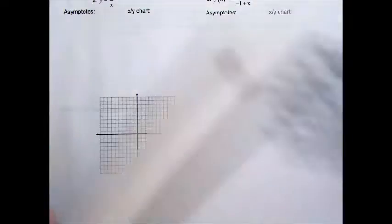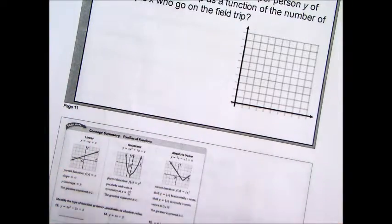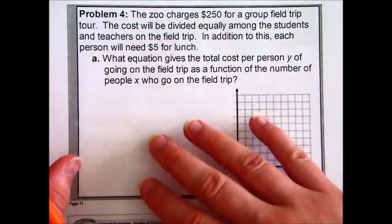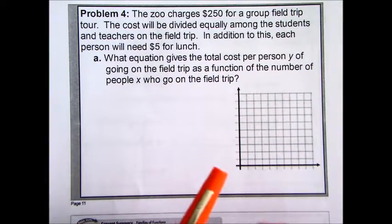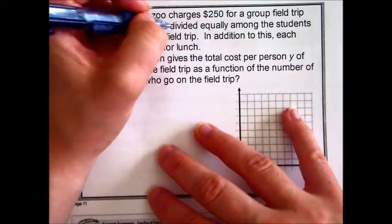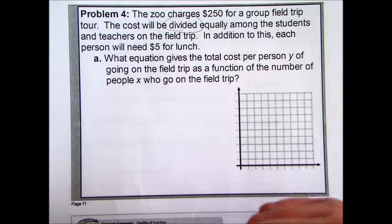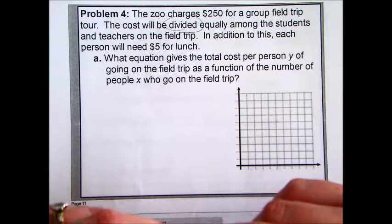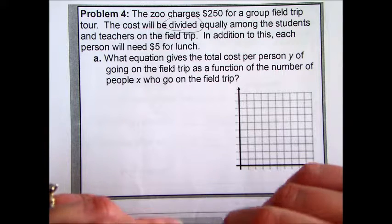Alright, problem 4. Let's see what we've got going on. The zoo charges $250 for a group field trip tour. The cost will be divided equally, okay, this is a pretty important word there, equally among, divided equally among the students and the teachers, so among how many people go. So, in addition to this, everybody's going to have to pay $5.